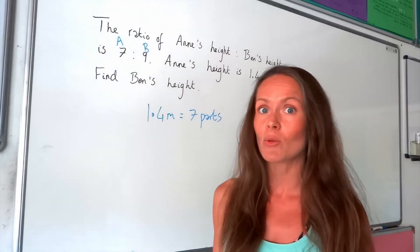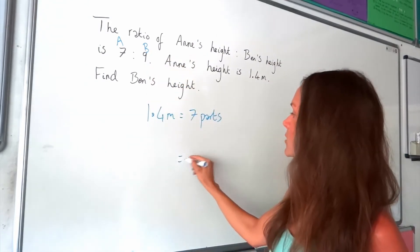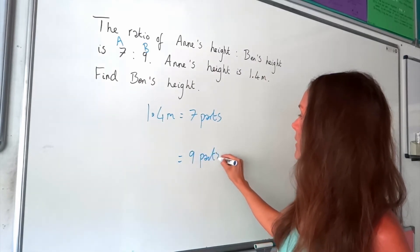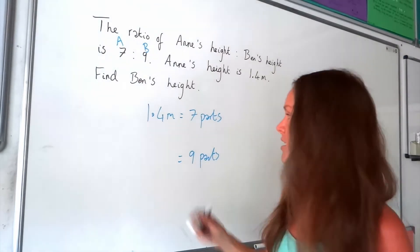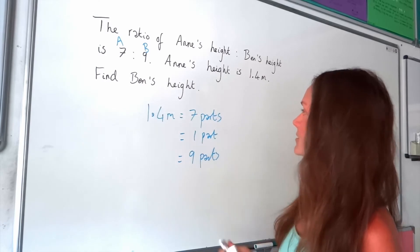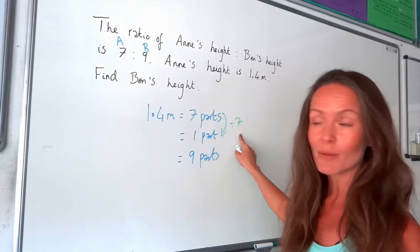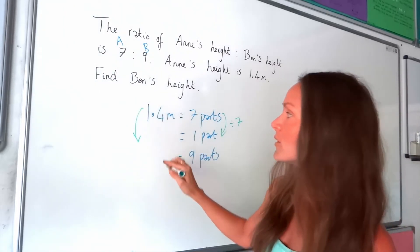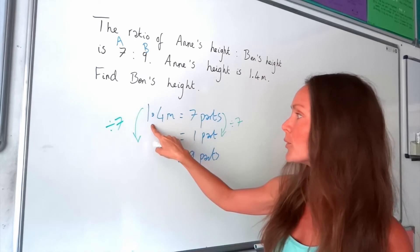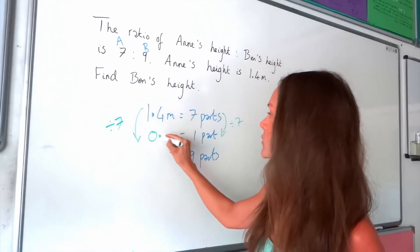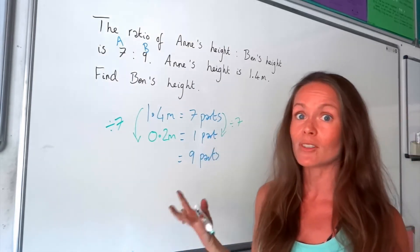The question is to work out Ben's height, and Ben has nine parts. So we need to work out the value of nine parts. Just like before, we first need to find the value of one part. If we've got seven parts and need to find one part, we divide by seven — and I must do the same with the height, dividing 1.4 by seven. That gives 0.2 metres, or 20 centimetres. So one part equals 0.2 metres.